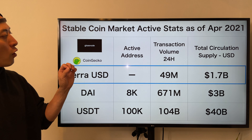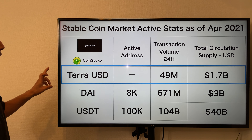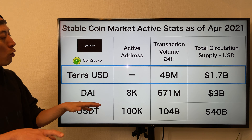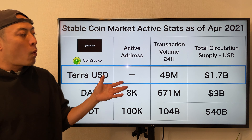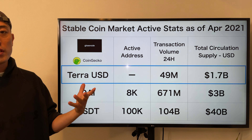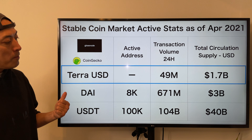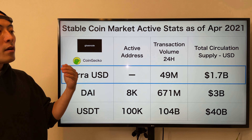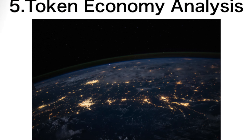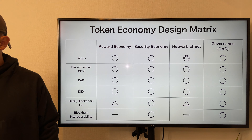Number four, execution power analysis. Here are the stable coin market active stats as of April 2021, with data from Glassnode and CoinGecko. The comparison items are: active address, transaction volume, and total circulating supply in USD. Our main focus for competition is TerraUSD vs. DAI. One key point: since Terra takes the multiple fiat currency approach, they can acquire multiple fiat currency markets for stable coin mass adoption — such as Terra Korean Won or Terra Euro. Currently there is a significant market share difference between DAI and TerraUSD, but TerraUSD may be able to catch up soon.